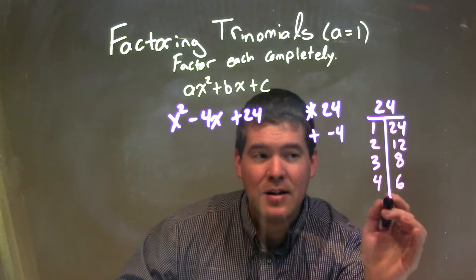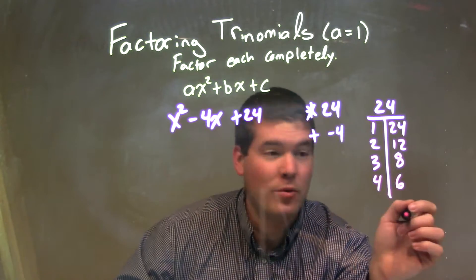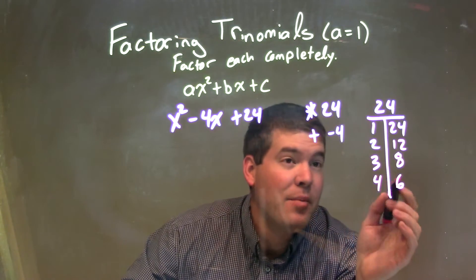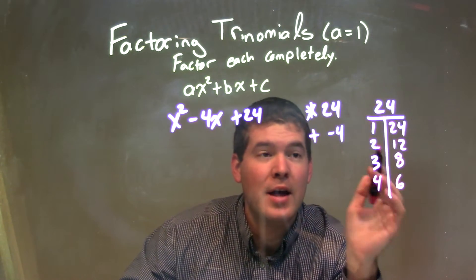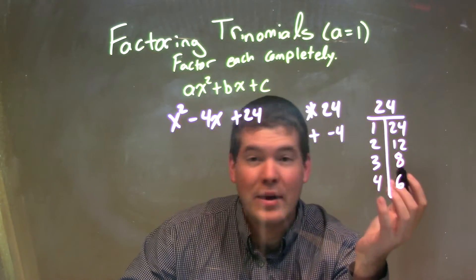And then after that, it's just going to flip back. 6 and 4, 8 and 3, 12 and 2, and 24 and 1. But here are all the pairs, all the pairs and numbers that multiply to be a positive 24.